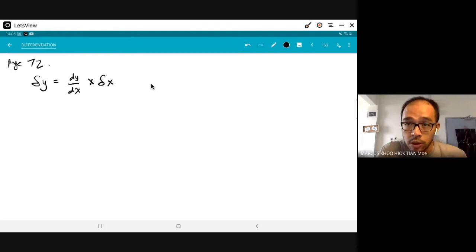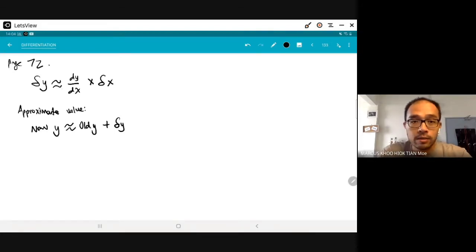And then we use the small change to find the approximate value. The approximate value, so the new y will be equals to the old y plus the del y. So this is how we would do the approximation question, except that don't forget, whenever we do approximation questions, it's only an approximation, so we use the squiggly equals sign.